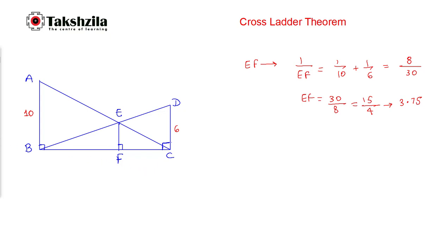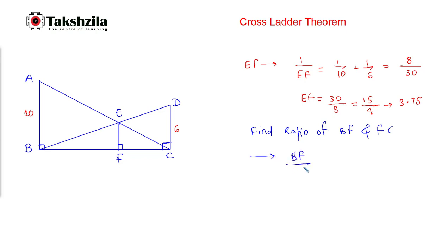The second question is to find the ratio of BF to FC. We can directly conclude that the ratio of BF to FC is the same as the ratio of AB to CD. So this ratio is 10 divided by 6, which equals 5 divided by 3. This is how we can use the cross ladder theorem. Thank you very much.